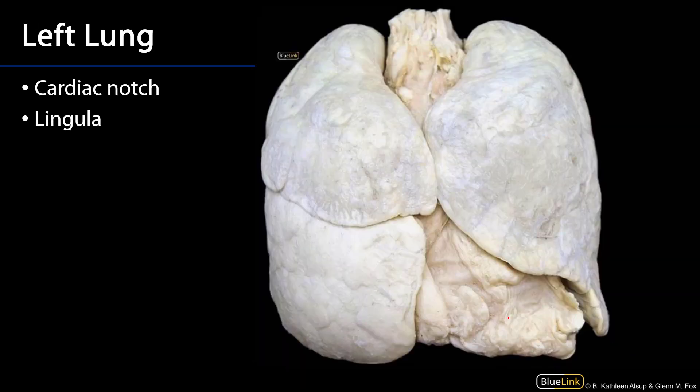Looking at the lungs surrounding the mediastinal spaces, and in particular the heart within the pericardium, we get a sense for the relationship of the various surfaces of the heart with the lungs.